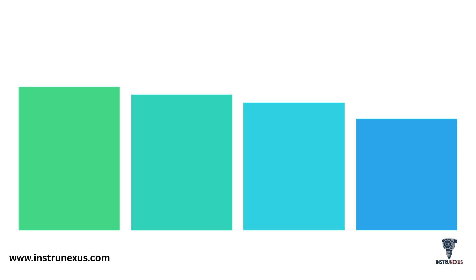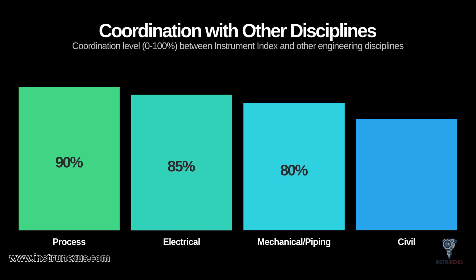The instrument index lives or dies by its coordination with other disciplines — it is not an isolated document. As this chart shows, the required level of coordination is extremely high. You have a 90% coordination level with the process team to get all the service descriptions and process data correct. You have an 85% coordination level with the electrical team for power supplies, cable data, and load lists. You're at 80% with the mechanical team for connection types, line information, and wetted materials. And even a 70% level with the civil team for things like location and mounting. It truly is a central hub document.